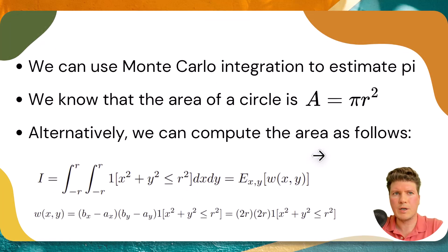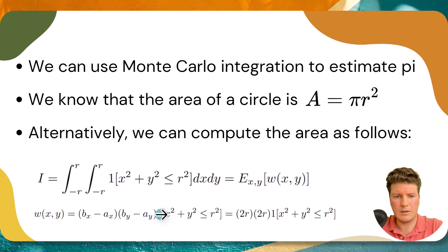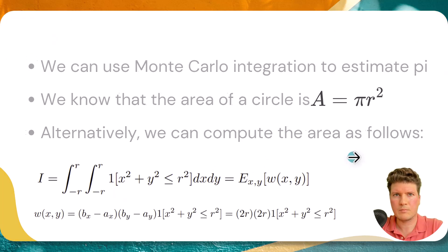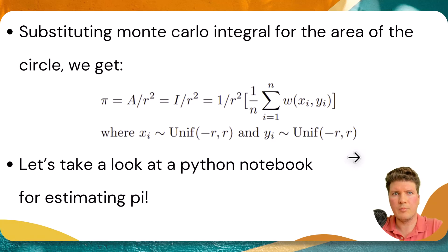Let's look at a fun example of using Monte Carlo expectation to estimate the value of pi. We know that the area of a circle is pi r squared. Alternatively, we can compute the area of a circle by sampling points from uniform distributions along the x and y axes and defining an indicator function equal to 1 whenever the sampled point is inside the circle of radius r, and 0 otherwise. We then sum up over all points that fall inside the circle. To estimate pi, we substitute our Monte Carlo integral for the area of the circle, computing the average of w(x_i, y_i) where x_i and y_i are i.i.d. samples from a uniform distribution between -r and r.